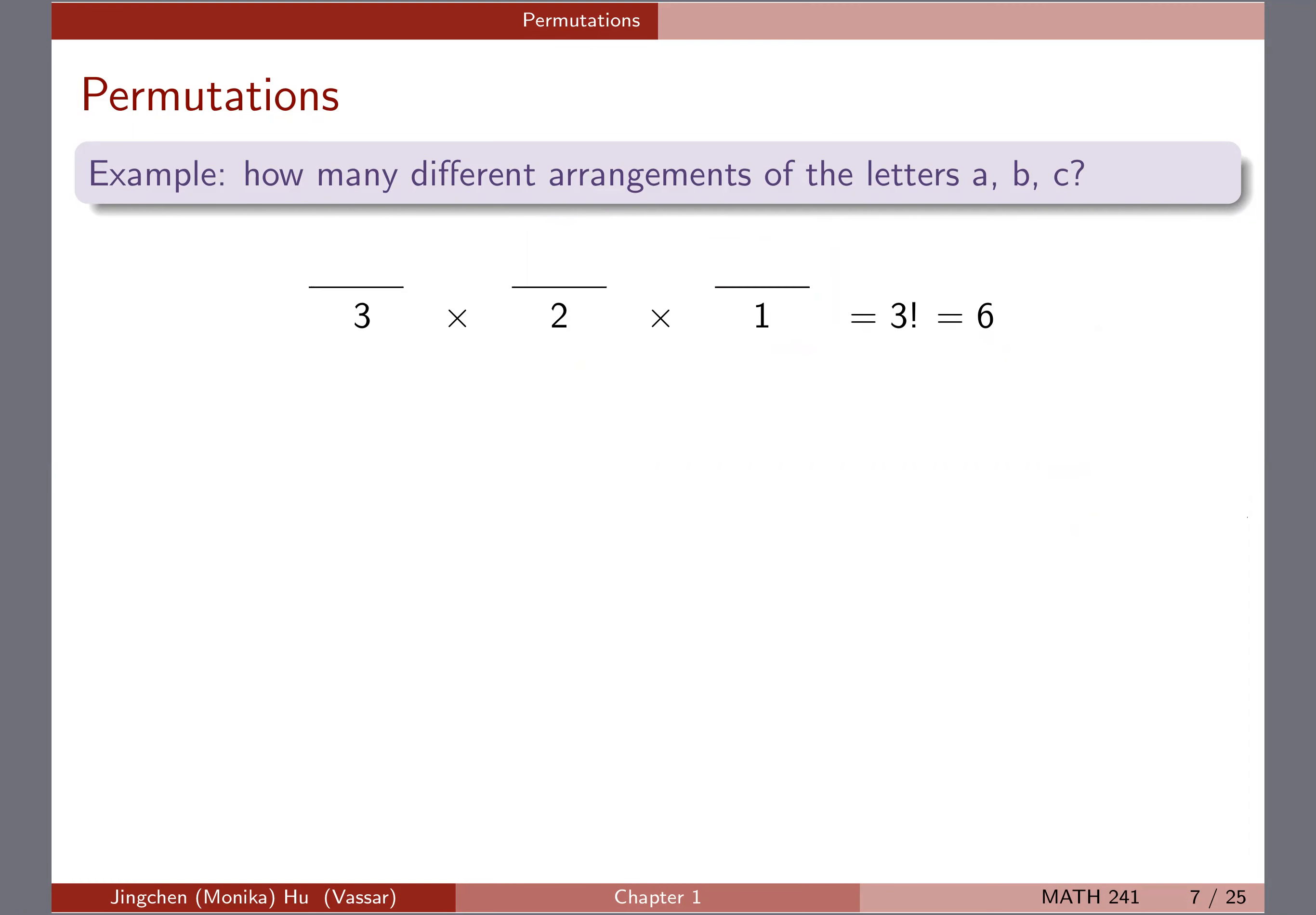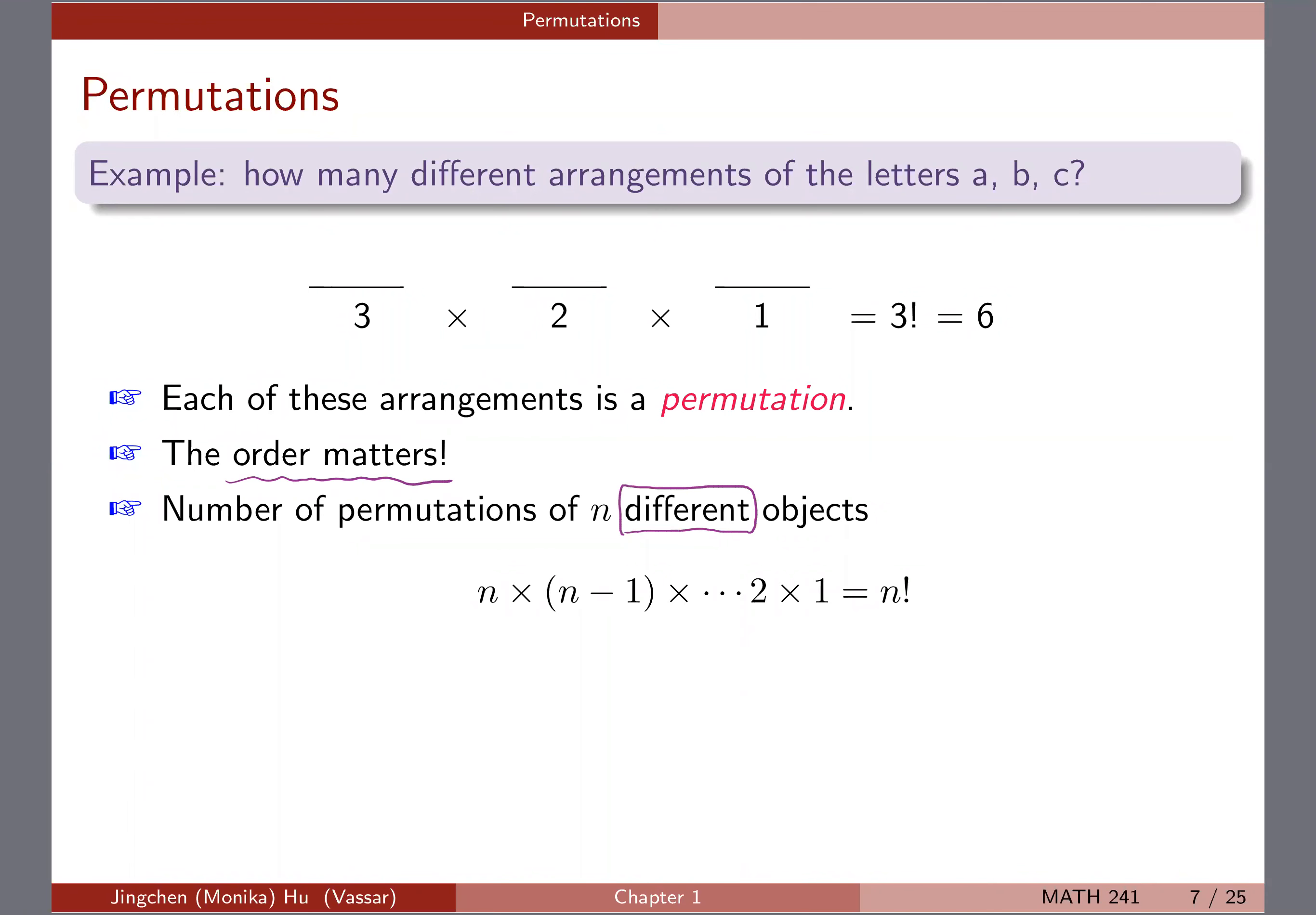So with this simple example, I want to cover that each of these arrangements is a permutation. And keep in mind that for permutation, the order matters, because A, B, C is different from B, A, C. And if you have n different or distinct objects, then the number of permutations is going to be n factorial. Just like what we see here, with three different letters, you're going to have three factorial, which is six number of arrangements, and based on the definition, it's going to be the number of permutation.